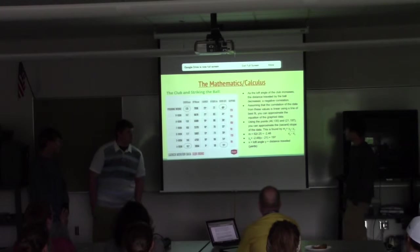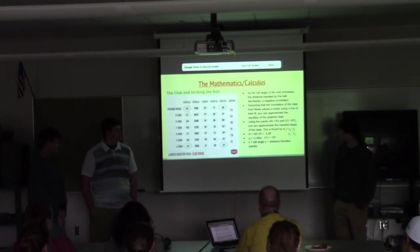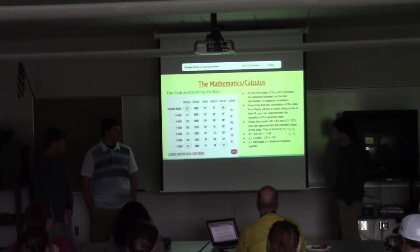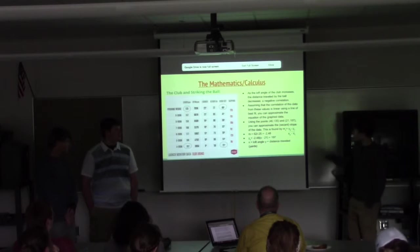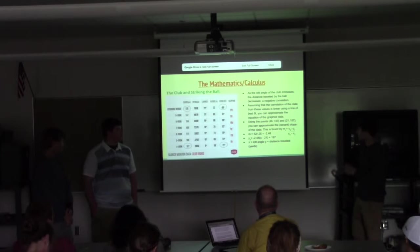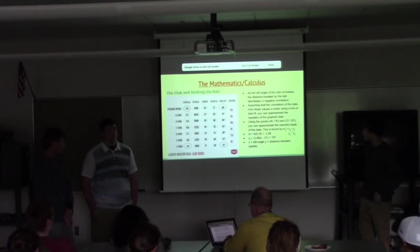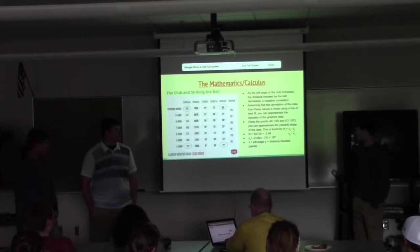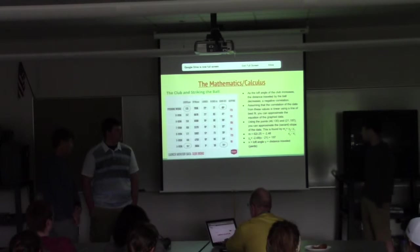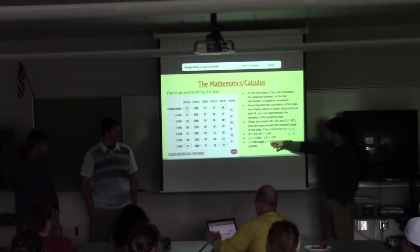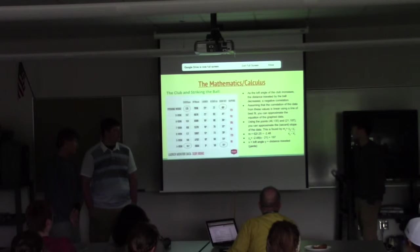The club and striking the ball - this is a chart of the different types of clubs and the different loft angles of the clubs right here, and then the distance that correspond with those angles. This shows that as the loft angle of the club increases, the distance that the ball travels decreases, so it's a negative correlation. Using a line of best fit, you can approximate the linear equation for the graph data. Using the endpoints to find the slope, the secant slope technically because it's not perfectly linear, you can find this by doing y2 minus y1 over x2 minus x1, and the slope approximates to negative 2.48. In this equation, you can plug in an x for which is any loft angle, and then it will result in an approximation for the distance that the ball travels.